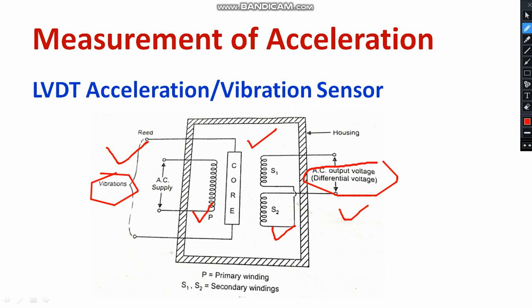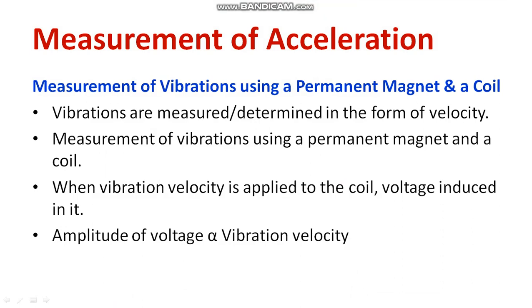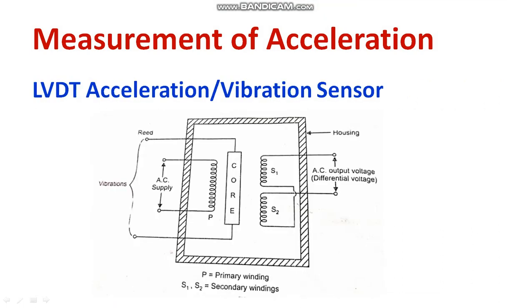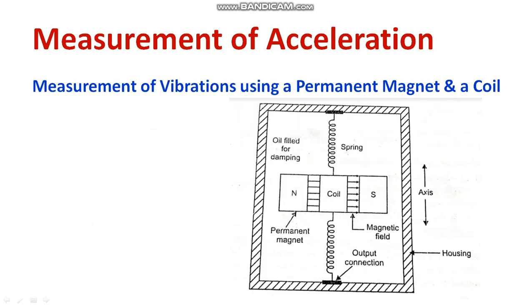If the core is at the middle position, the output will be zero. If it is in the upper position, you get ES1 greater than ES2 — output will be ES1 minus ES2. If it is on the lower side, then ES2 minus ES1. Similarly, vibration can be measured using a permanent magnet and coil — the same method discussed for measurement of velocity. With respect to the movement, you can check the acceleration.